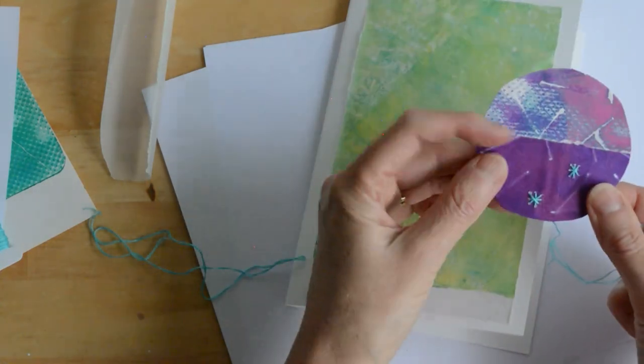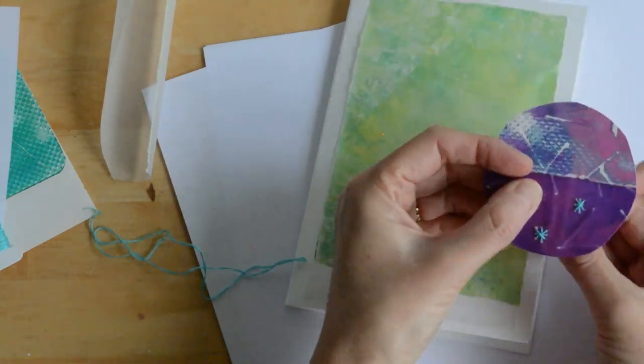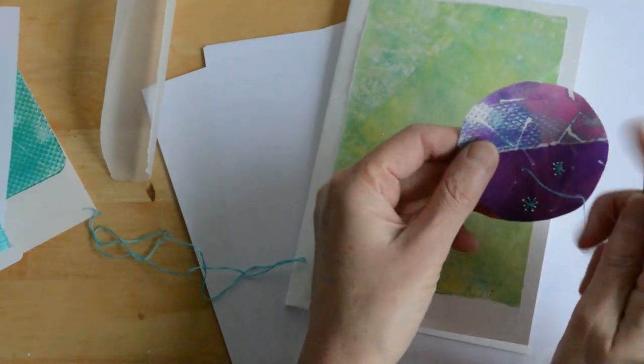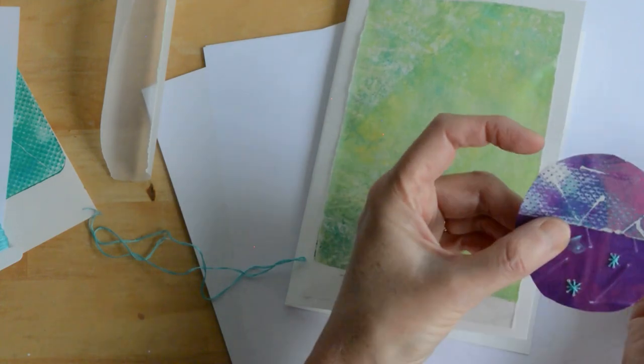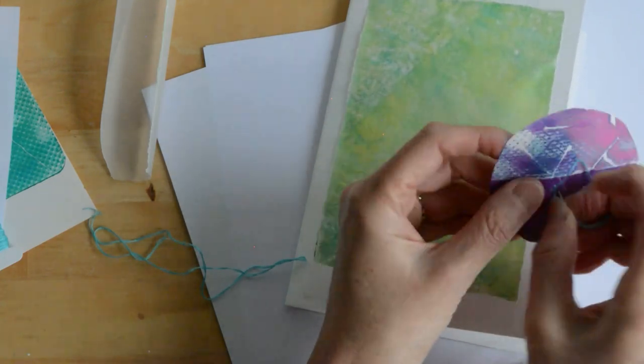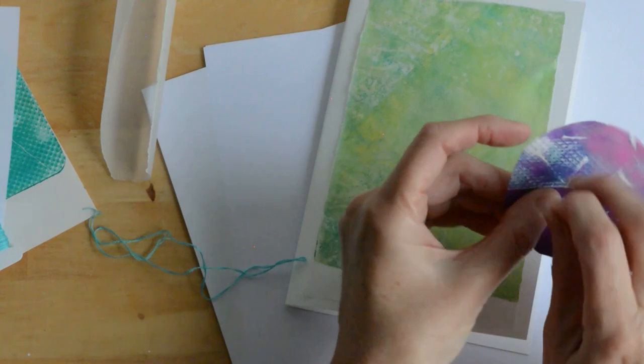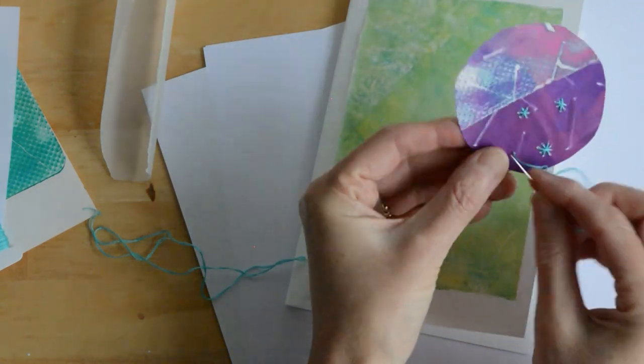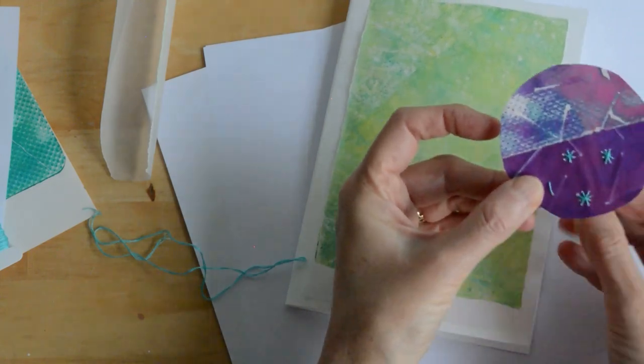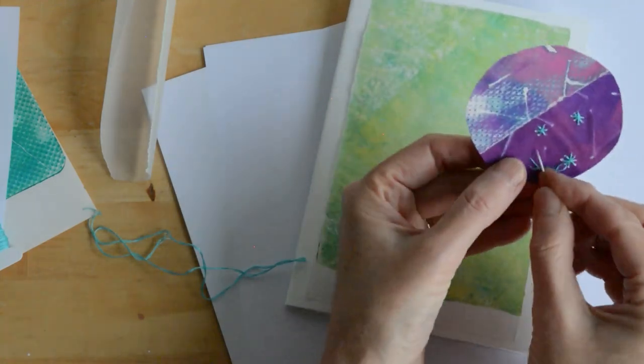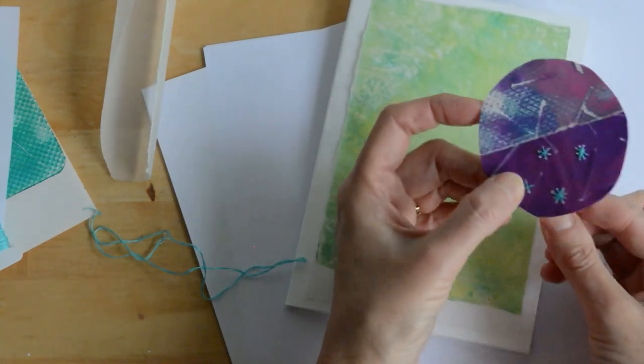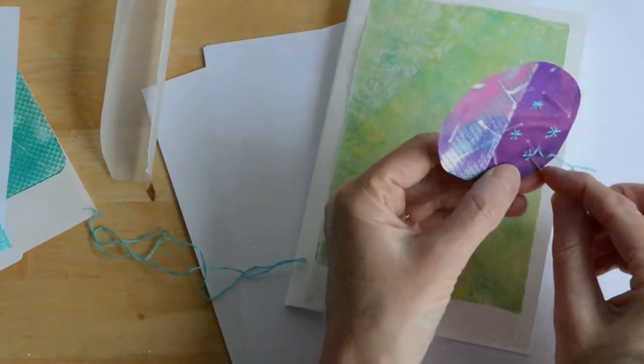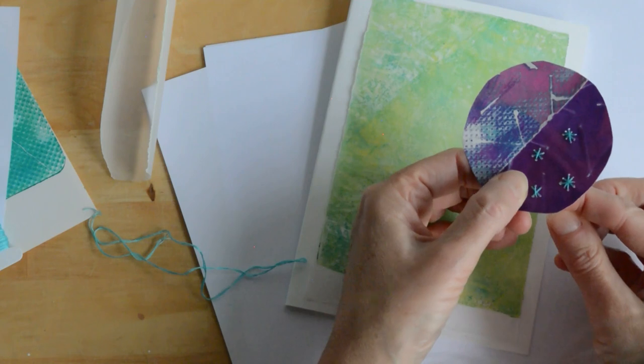Once that's done, I'm going to glue it to the card and then stitch around the edge of the bauble with a white thread just to add a bit of emphasis. Then add my words, and the card's made.